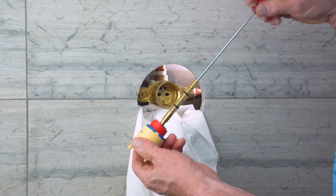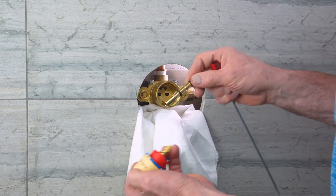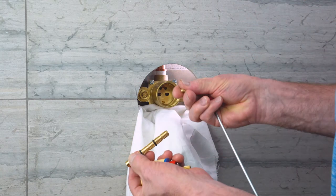Use a long slotted screwdriver inside the cartridge brooch to loosen the screw and remove the brooch.